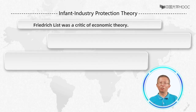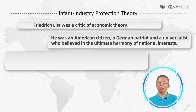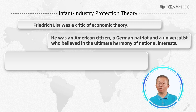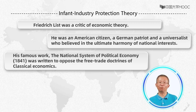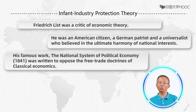Friedrich List was a critic of economic theory. He was an American citizen, a German patriot, and a universalist who believed in the ultimate harmony of national interests. His famous work, The National System of Political Economy, was written to oppose the free trade doctrines of classical economics.